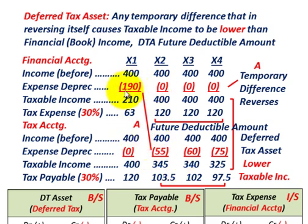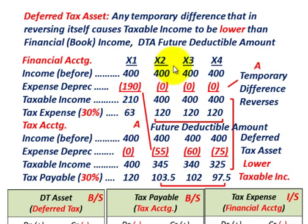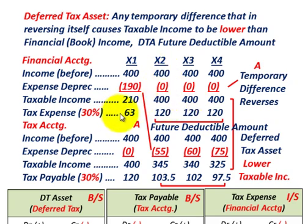For financial accounting in the first year, we have a $190,000 deduction from income, so taxable income is $210,000. Tax expense at 30% is $63,000. In years X2 through X4, there's no deduction for this depreciation expense, so taxable income is $400,000 and tax expense is $120,000 for each of those three years.